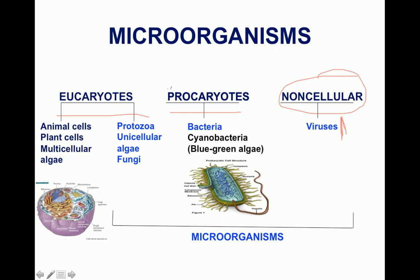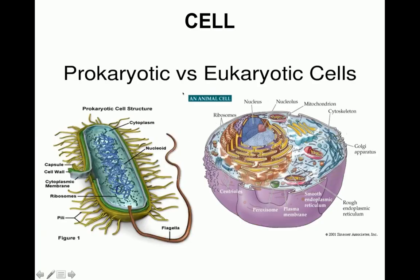Coming to prokaryotes - the bacterial cells - we will discuss the bacterial cell in detail before moving on to special bacteriology. The diagram shows the structural comparison between prokaryotic and eukaryotic cells. The outermost layer is the capsule, beneath which is the cell wall. The cell wall is unique to prokaryotic cells - never seen in eukaryotic cells, which only have a cytoplasmic membrane.